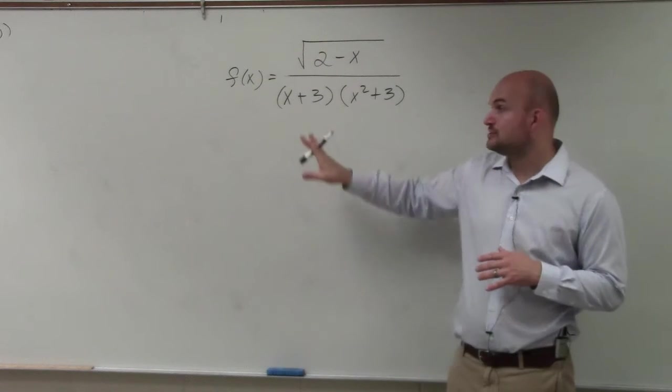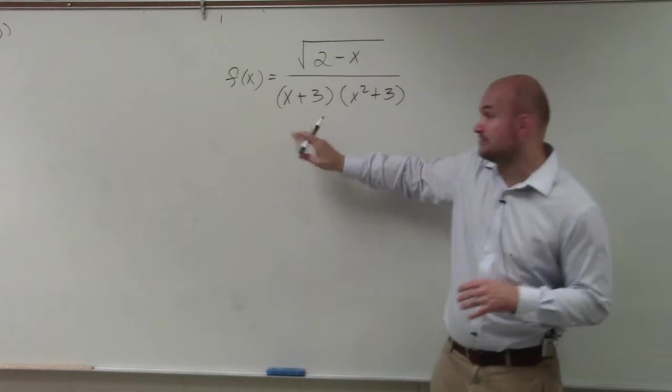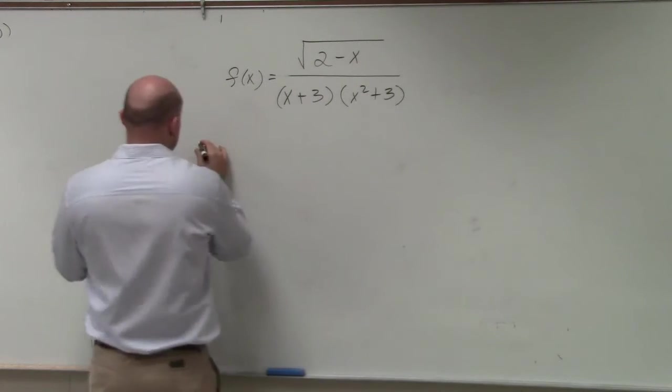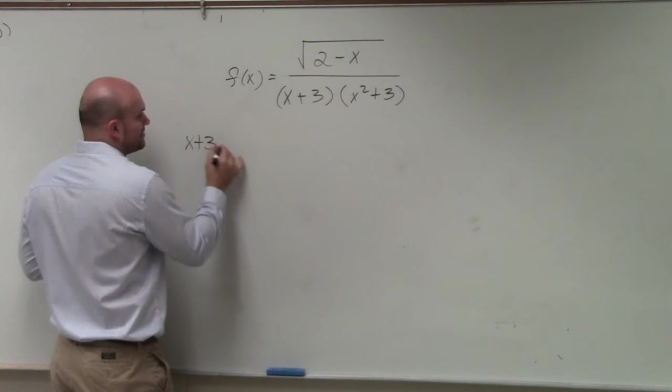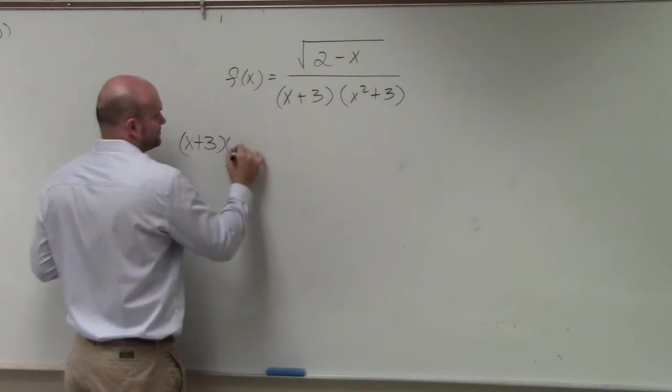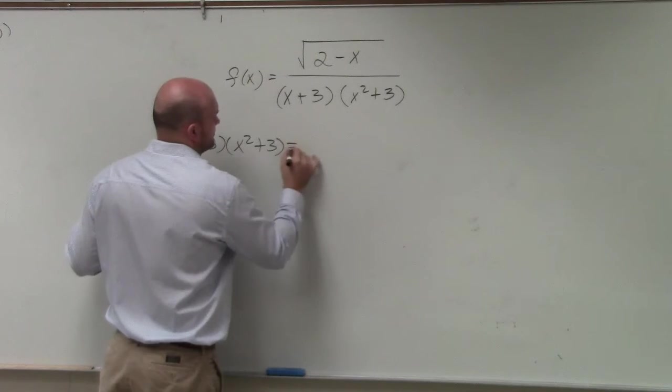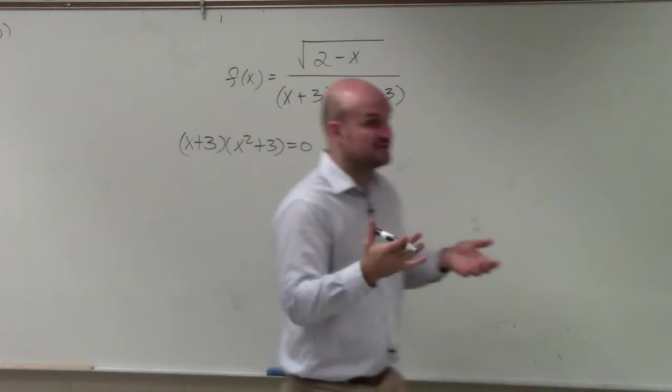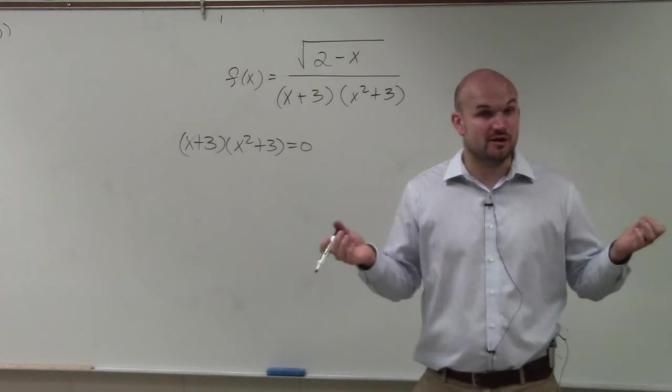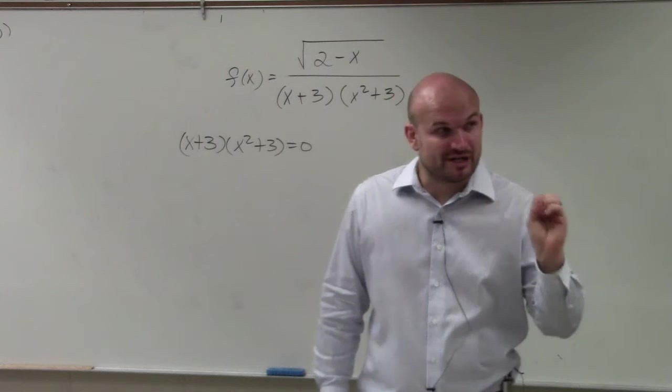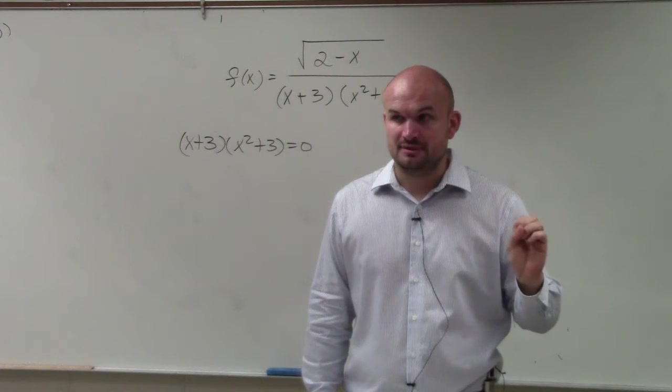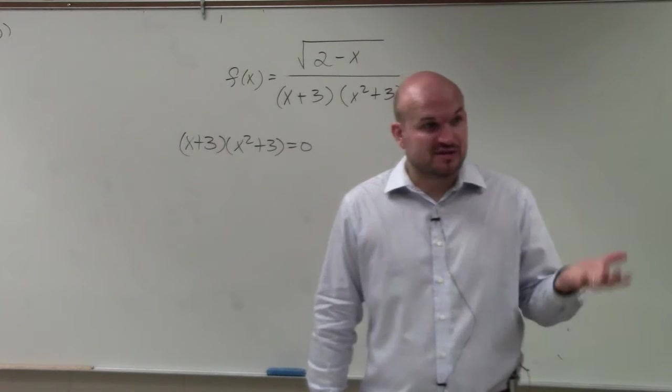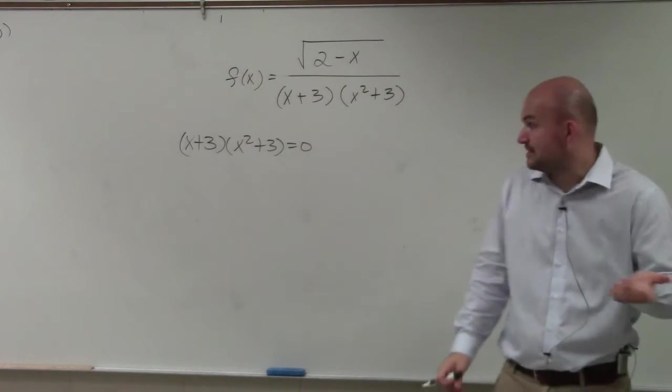So the first thing you do to identify your domain is set your denominator equal to 0. So if you have a denominator, set it equal to 0, because we want to find the values that make the denominator equal to 0. The values that make the denominator equal to 0 are not in our domain, because those are the values that are not going to produce a real number, because you can't divide by 0.